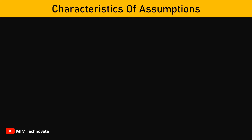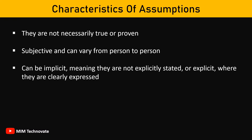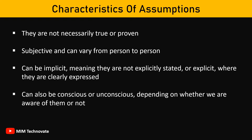Characteristics of Assumptions. One key characteristic of assumptions is that they are not necessarily true or proven. They are subjective and can vary from person to person. Assumptions can be implicit, meaning they are not explicitly stated, or explicit, where they are clearly expressed. They can also be conscious or unconscious, depending on whether we are aware of them or not.